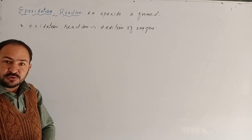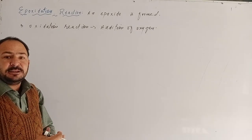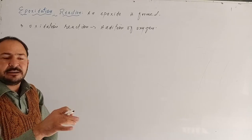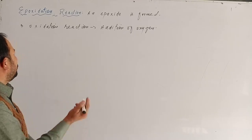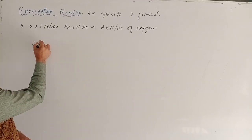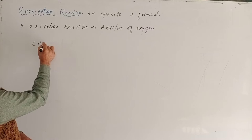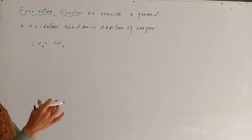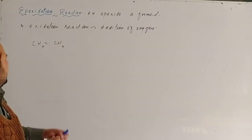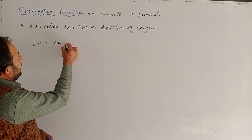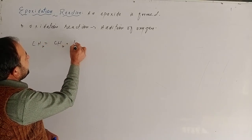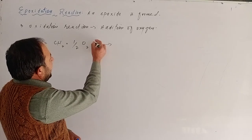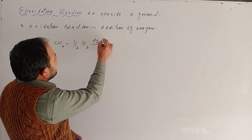Yeh hain peh ham doh examples lenge ki kis tarah epoxidation hoti hai alkene me — compounds jahan bhi double bond ho. The simplest member of the alkene series is called ethene. When ethene is treated with oxygen in the presence of silver oxide.